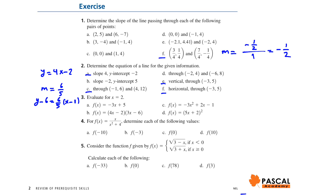Part E: the vertical line through (negative 3, 5). x equals negative 3 is the equation of the vertical line, and y equals 5 is the equation of the horizontal line passing through negative 3 and 5.